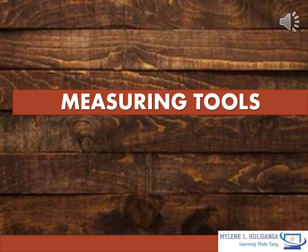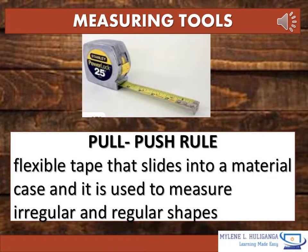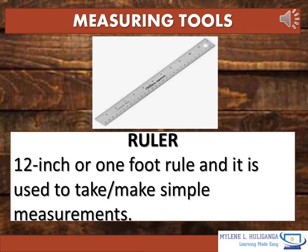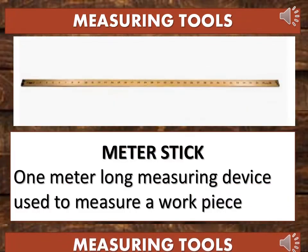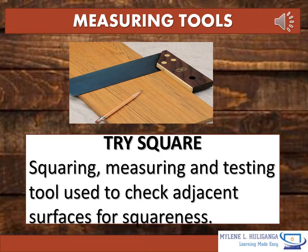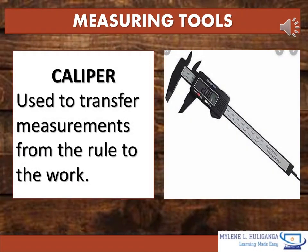The following are the tools used for measuring. First is the pull-push rule: flexible tapes that slide into a material case, used to measure regular and irregular shapes. Ruler: a 12-inch or one-foot rule used to take or make simple measurements. Meter stick: a one-meter long measuring device used to measure a workpiece. Tri-square: a squaring, measuring, and testing tool used to check adjacent surfaces for squareness. Caliper: used to transfer measurements from the rule to the work.